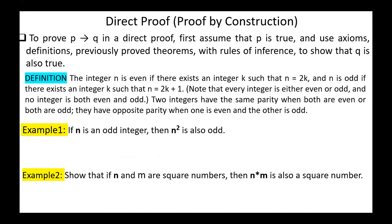First, direct proofs, also known as proof by construction. In a direct proof, to prove that P implies Q, we first assume that P is true and use axioms, definitions, previously proved theorems, and rules of inference to show that Q is also true.